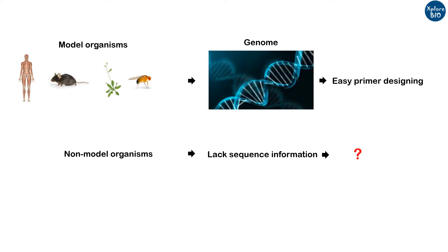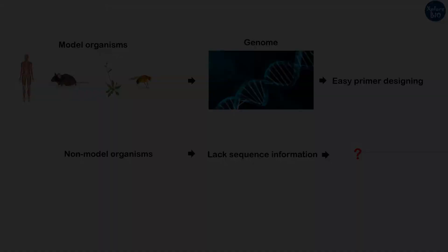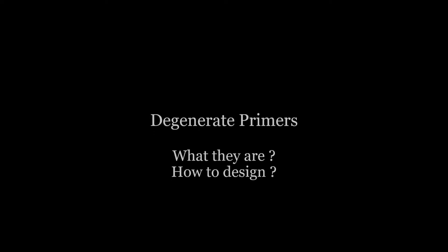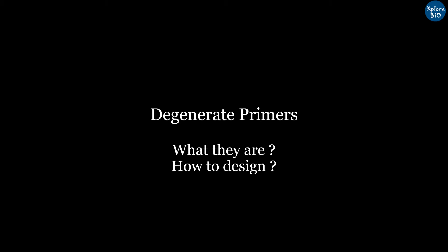Is it possible to design primers for such genes for which the sequence is not available? In today's video, I will talk about degenerate primers and how to design them for PCR amplification or cloning of genes in species lacking the sequence information.